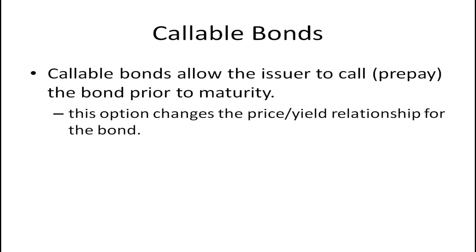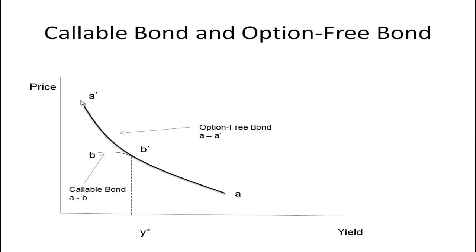Let's take a look at some bonds that have options embedded in them, and what happens is it changes this price-yield relationship. For example, suppose this is the standard bond price-yield relationship here for an option-free bond, that is just a regular bond with no call features, no put features, etc.